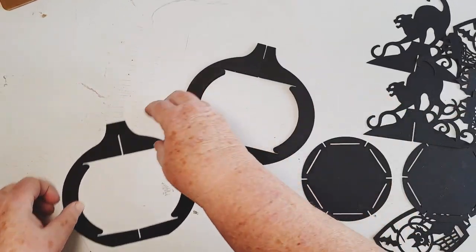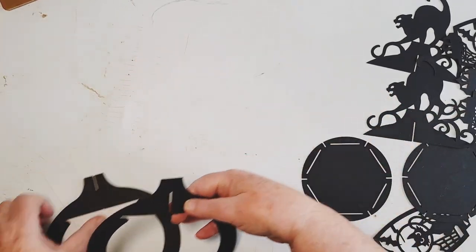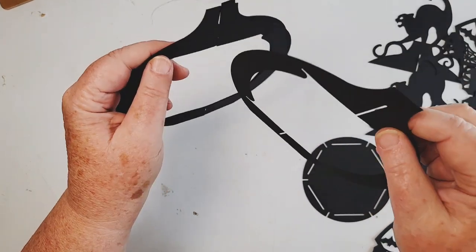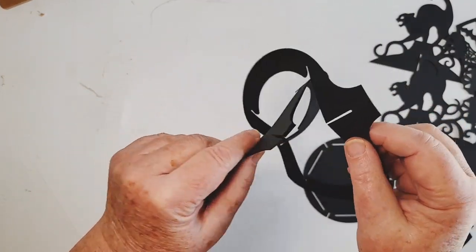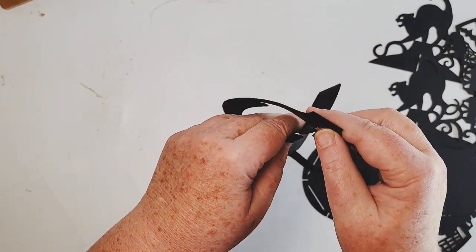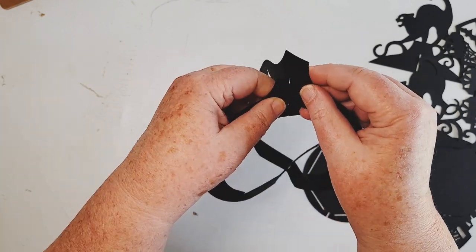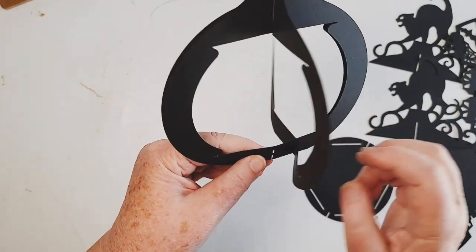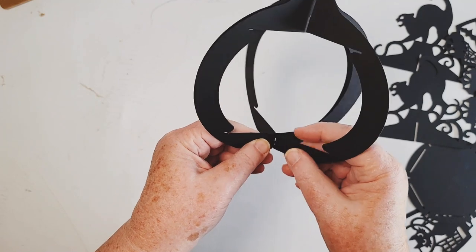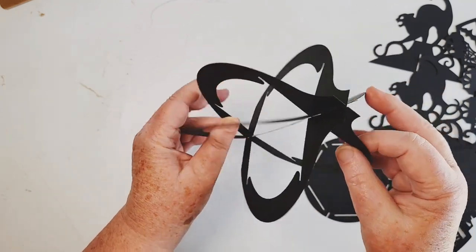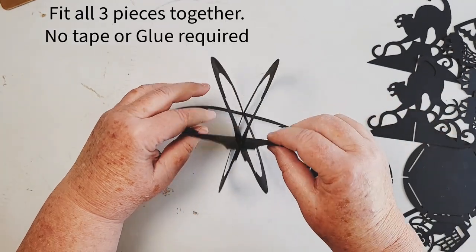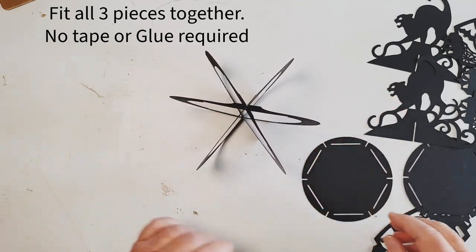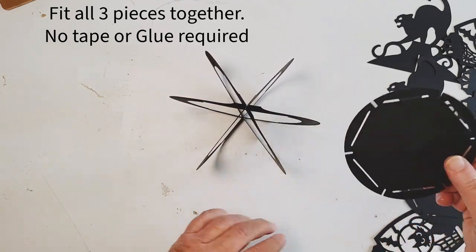Now take your third piece, and go up through the top here, and from the bottom there. So now you have all three pieces fitting together. You don't need to tape anything, you don't need to glue anything.